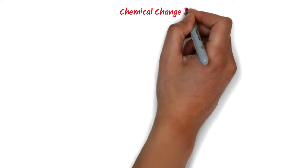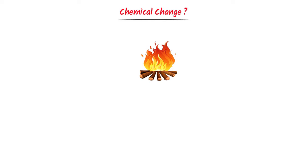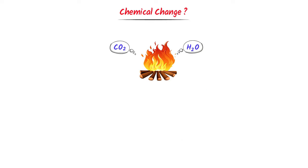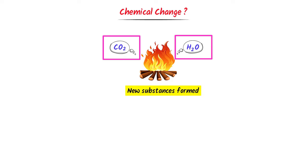Now, what is chemical change? Consider burning wood. When you burn it, the wood changes to produce carbon dioxide gas and water vapor. New substances are formed — carbon dioxide gas and water vapor are formed from the wood. So burning wood is an example of a chemical change.